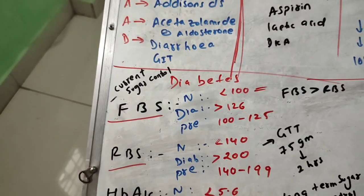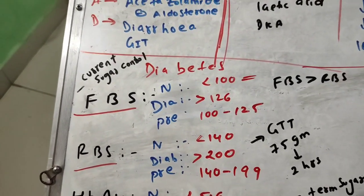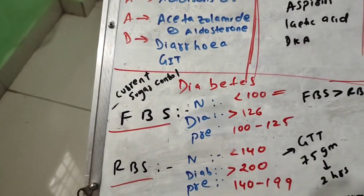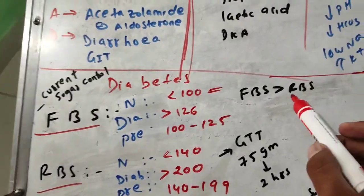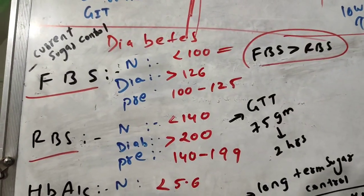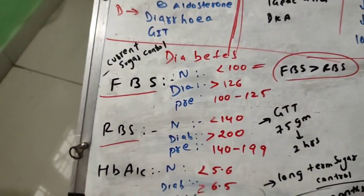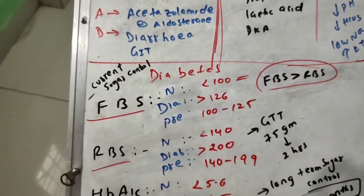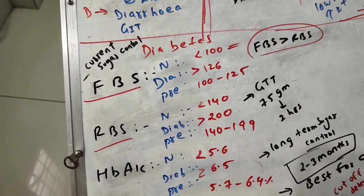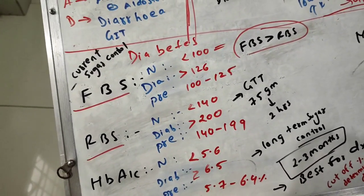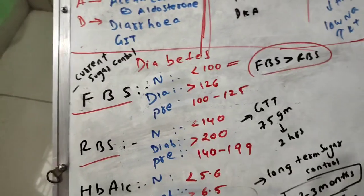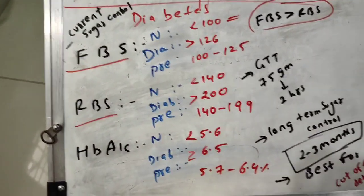If you want to see the current glucose level and confirm whether a patient is diabetic or not, you perform FBS. FBS is better than RBS because it gives an exact value. FBS is always done in the morning after fasting.